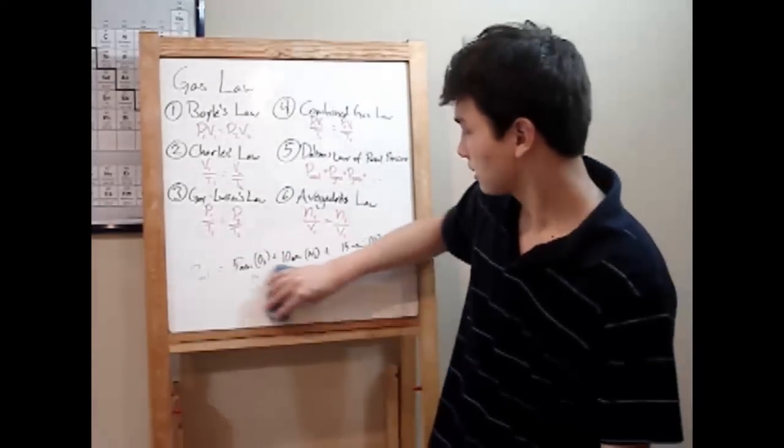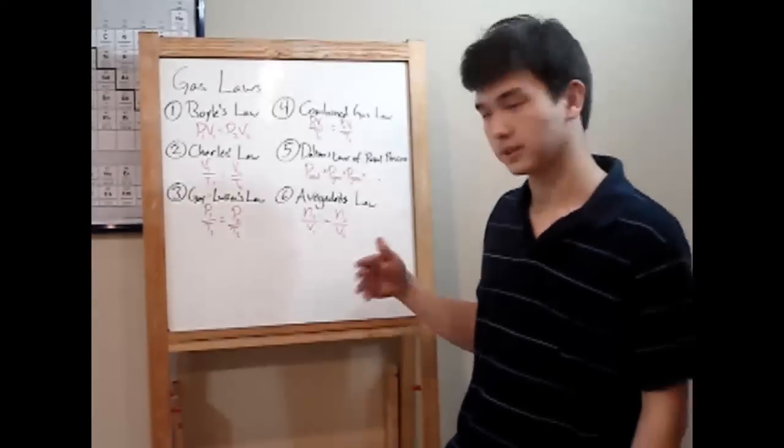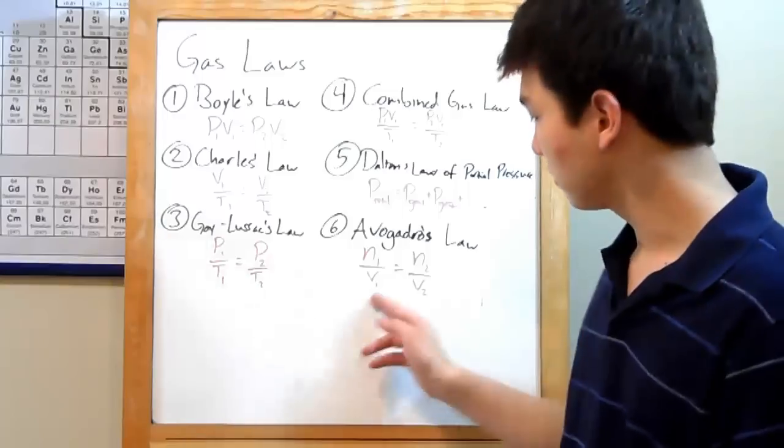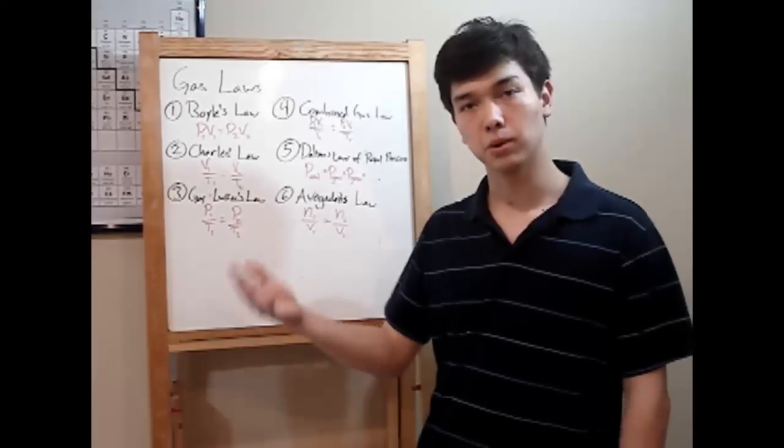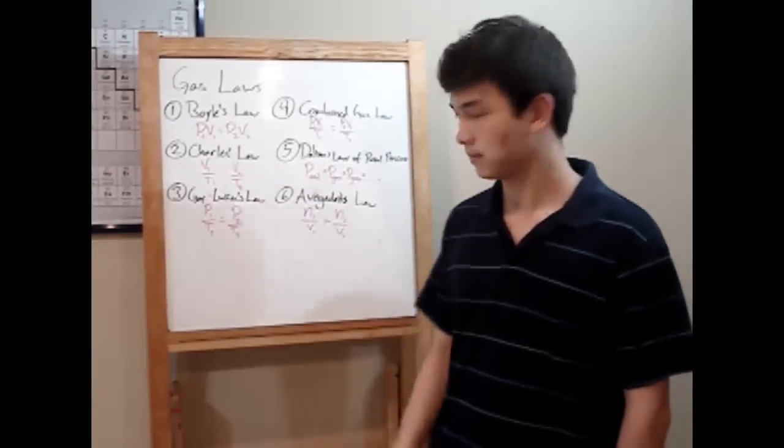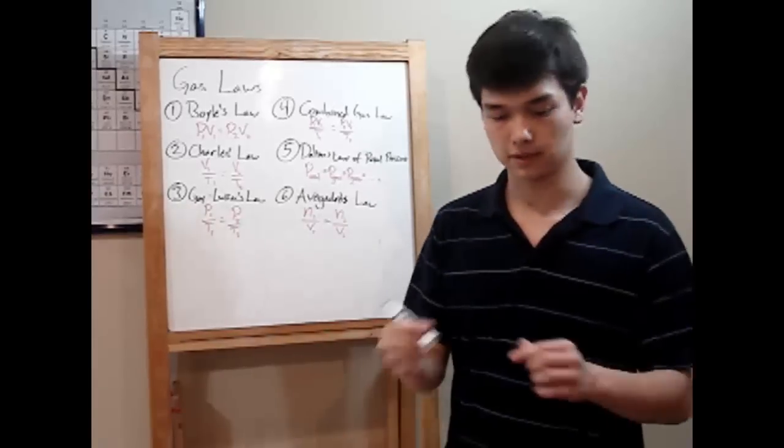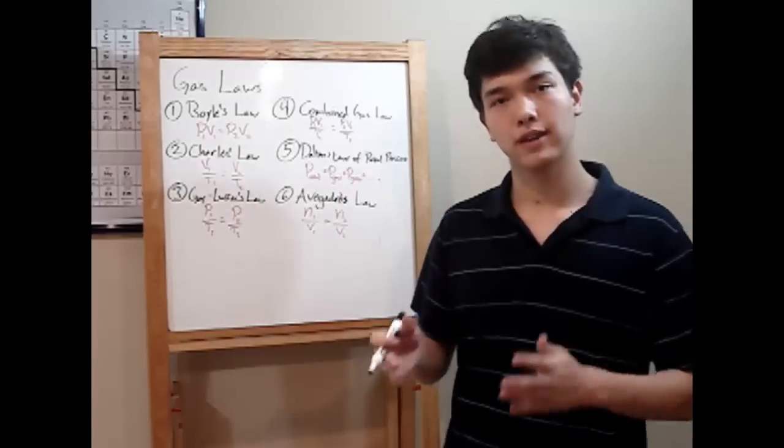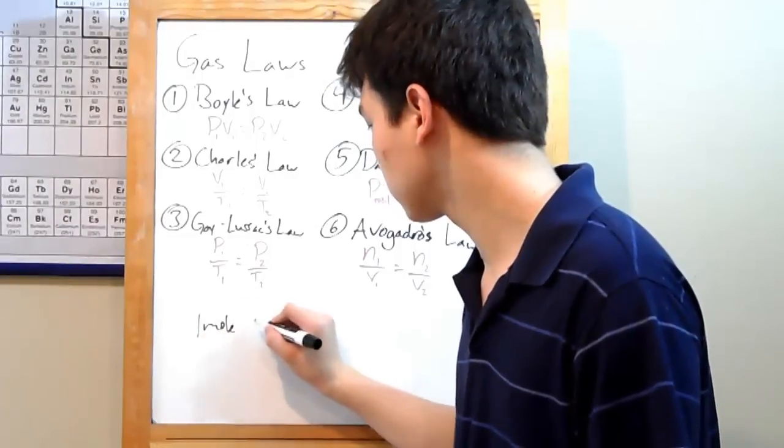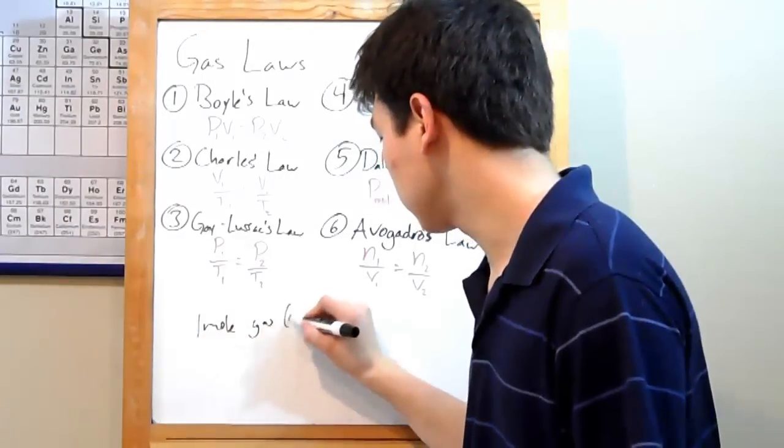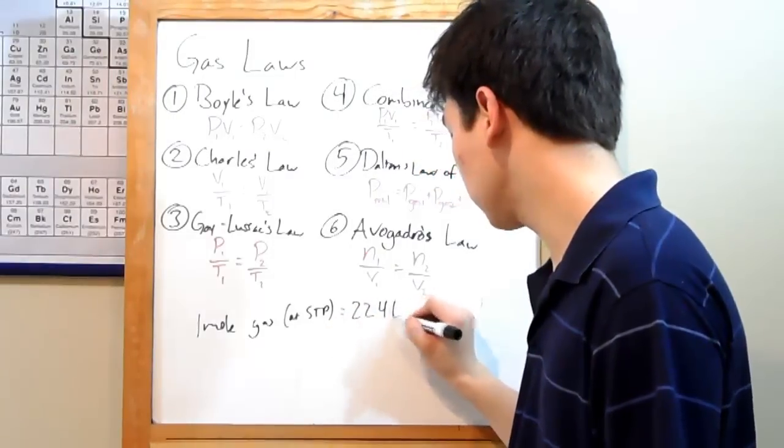The last thing is Avogadro's law. And this is N1 over V1 equals N2 over V2. V is still volume. That won't be changing. But N, whenever you see N in chemistry, think moles, because that's usually what it is. It's moles over here. Your moles of gas over volume is moles of gas over volume, if there's a change. Now, before we go on, there's just one factoid that teachers like you to know. And that's that one mole of gas at STP will occupy a volume of 22.4 liters.